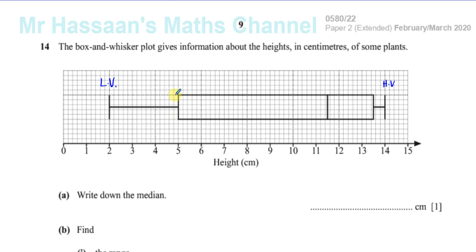And these lines inside this box are what are called the lower quartile, which is given by the symbol Q1. And this is called the median, which is Q2. And this is called the upper quartile, which is Q3.